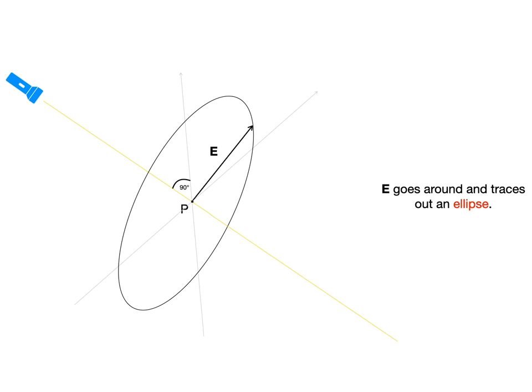For monochromatic light we also know that E goes around p and in general it traces out an ellipse in the plane that is perpendicular to the light ray. Besides this general elliptical form, there are two very important special cases, which are widely used in both theory and practice.